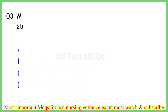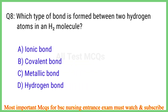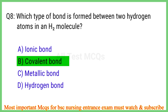Q8. Which type of bond is formed between 2 hydrogen atoms in an H2 molecule? The right answer is option B: Covalent bond.